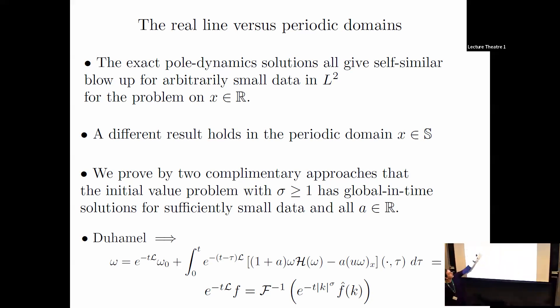The exact pole dynamic solutions all give self-similar blowup for arbitrarily small data on the real line. I haven't presented any exact solutions for the periodic problem, but we have found those and I'll give one at the end.